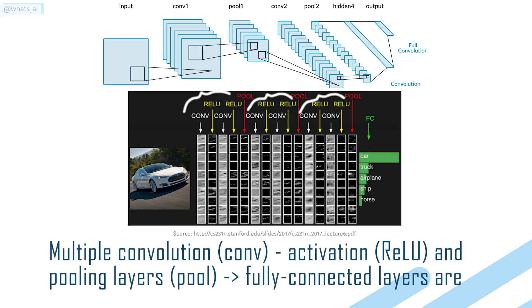As you can see in this image, there's a repetition of multiple convolution, activation, and pooling layers in a CNN architecture until we reach the end of the network where the fully connected layers are.